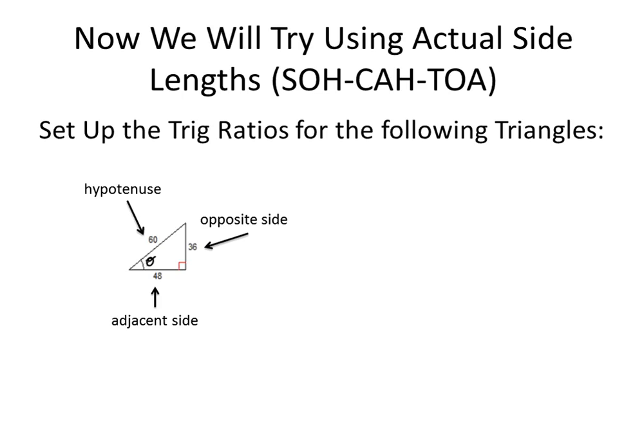Setting up the ratios using SOH-CAH-TOA: sine is opposite over hypotenuse, so sine theta equals 36 over 60. Cosine is adjacent over hypotenuse, so cosine theta equals 48 over 60. Tangent is opposite over adjacent, so tangent theta equals 36 over 48.